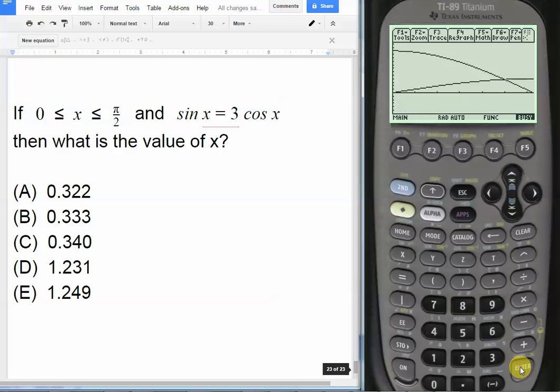Hit enter, and our intersection value is x equals 1.249. Here's the y value, but they want the value of x, which is 1.249, right here choice E. The answer is choice E, 1.249.